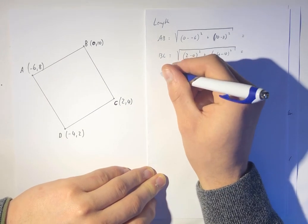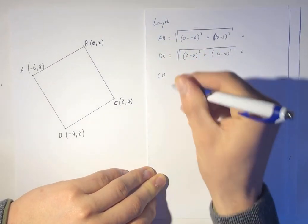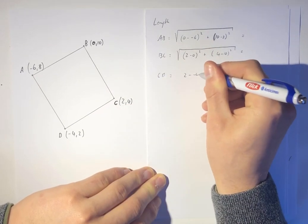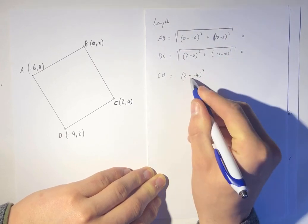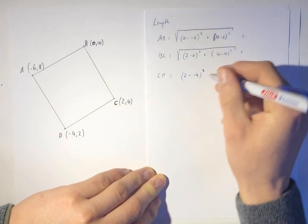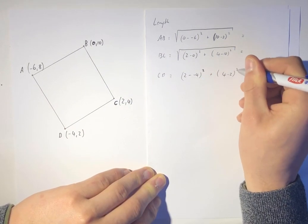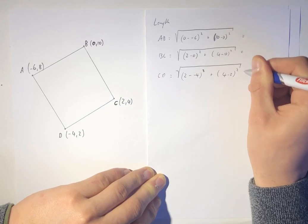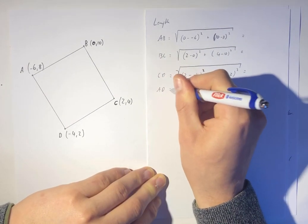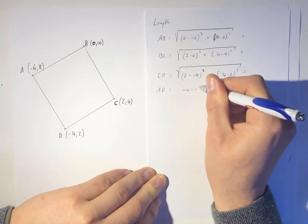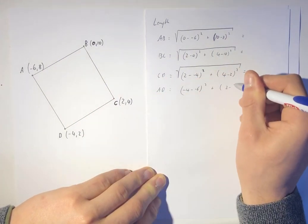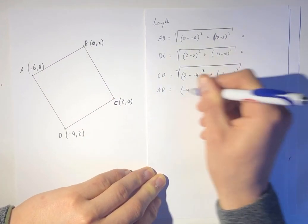So now we'll go CD, difference in the x squared is two take away negative four. Difference is always subtraction, isn't it? Plus the difference in the y squared, so four minus two, and that is all square rooted because it is just Pythagoras. And AD, so we're going to go negative four take away negative six, square it, plus two take away eight and square it.